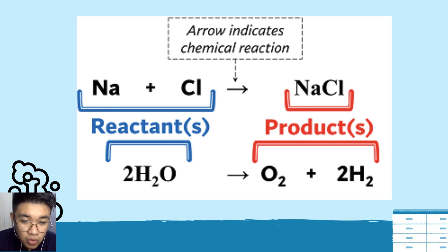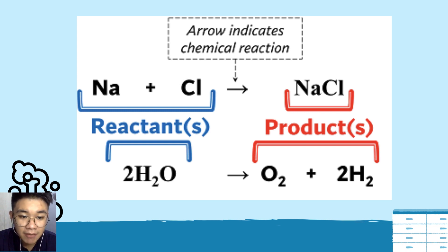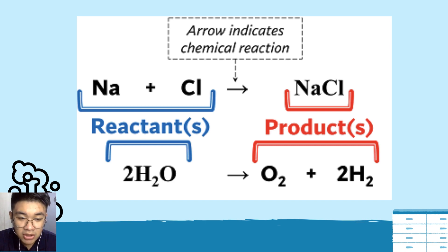Now look at oxygen. In the reactant 2H2O, the large coefficient 2 applies to oxygen as well, so there are 2 oxygen atoms. On the product side, O2 also has 2 oxygen atoms. Therefore, mass is conserved and the equation is balanced. That is also how you balance equations.